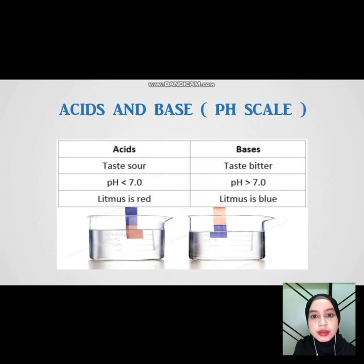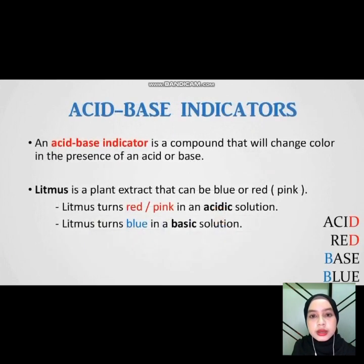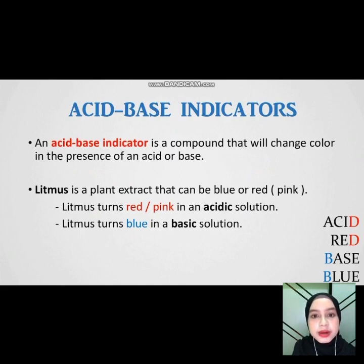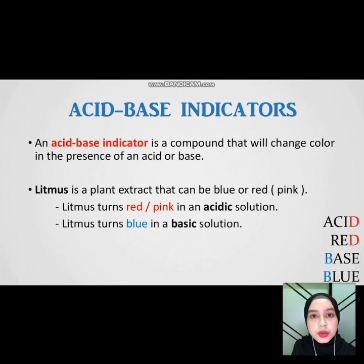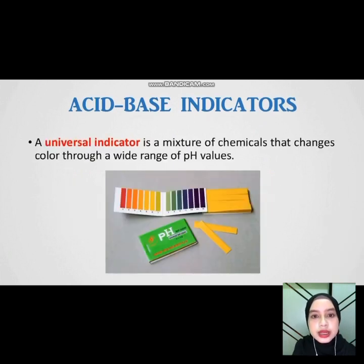This is acid and base — for acid, litmus is red; for base, litmus is blue. An acid-base indicator is a compound that will change color in the presence of an acid or base. Litmus turns to red or pink color in an acidic solution. Litmus turns to blue color in a basic solution. This is an example — a universal indicator.